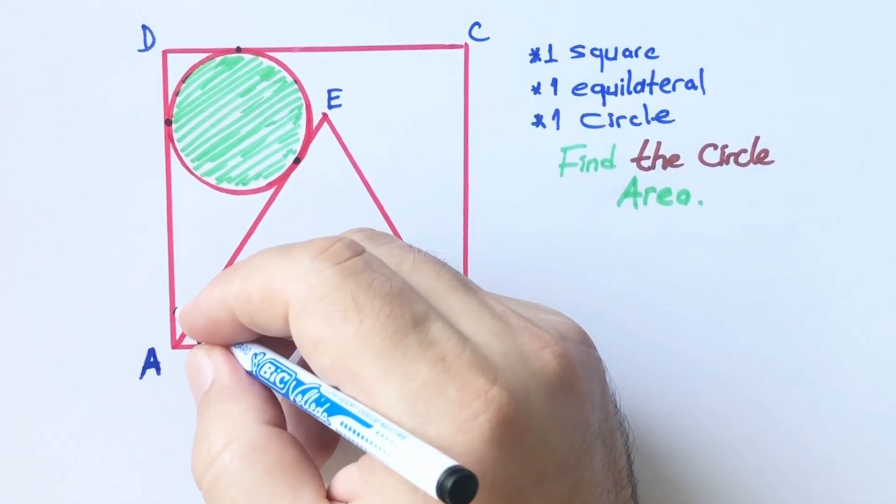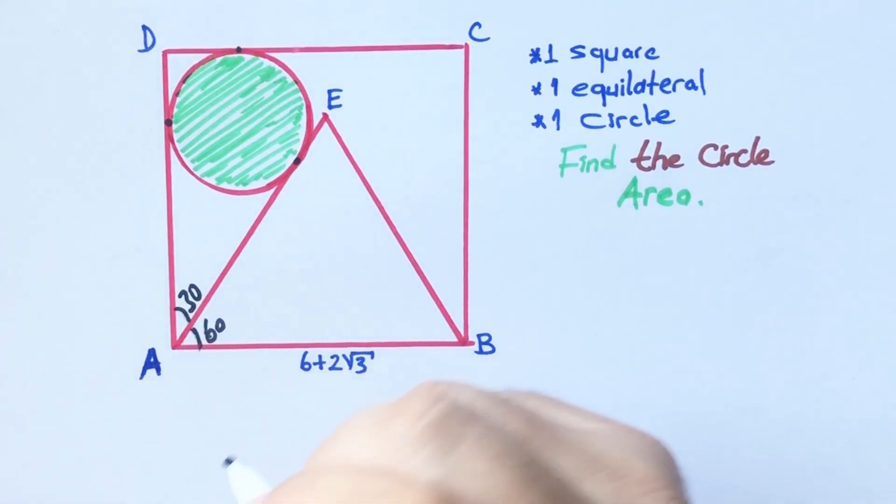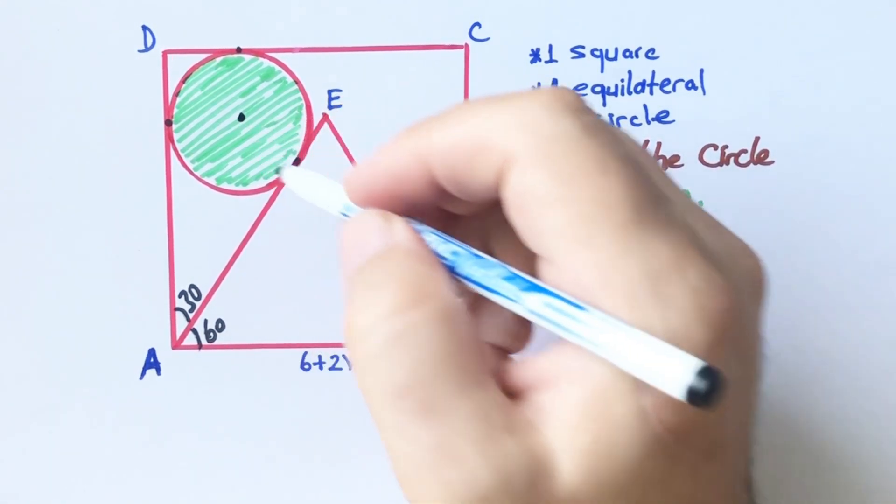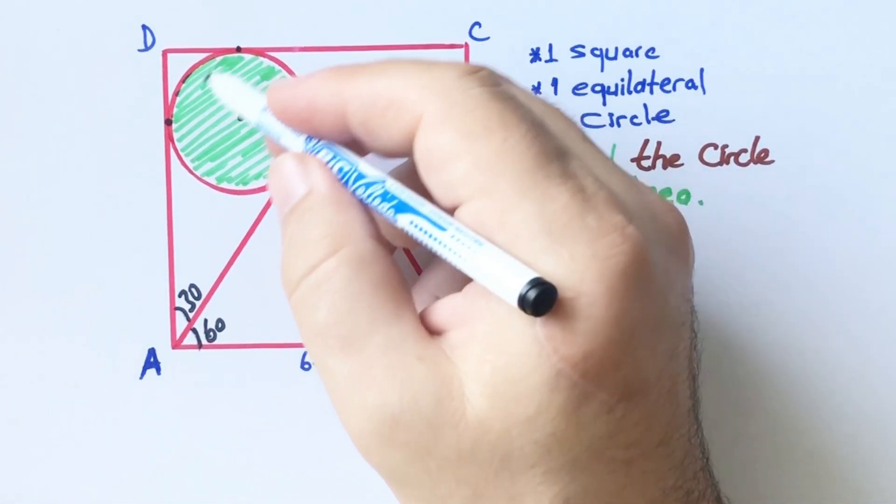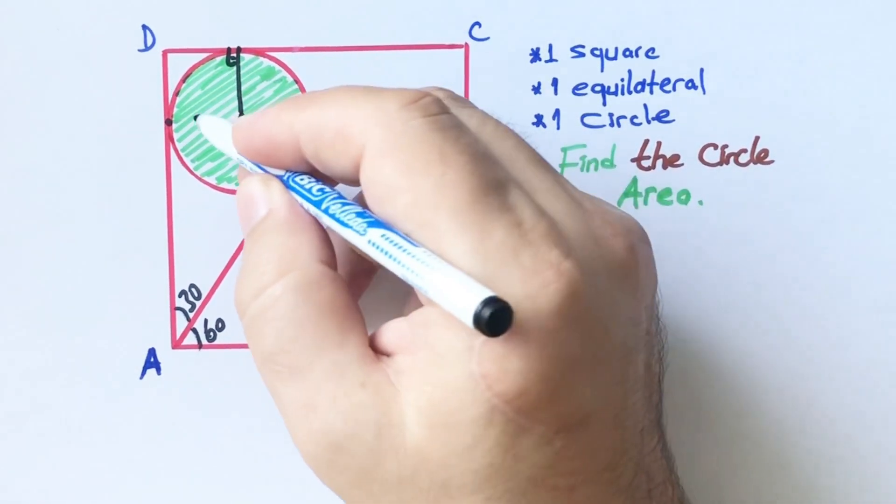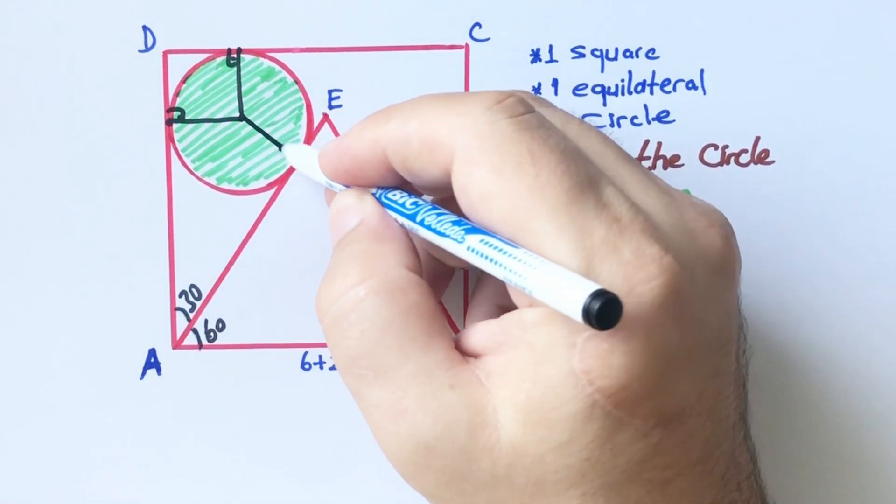Let's call this the center point. If we draw perpendicular lines to these tangent points like this.